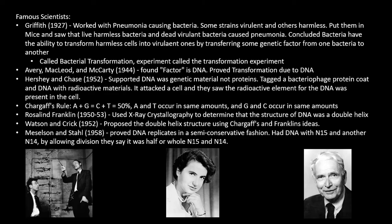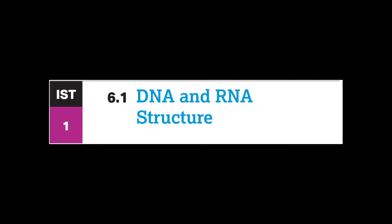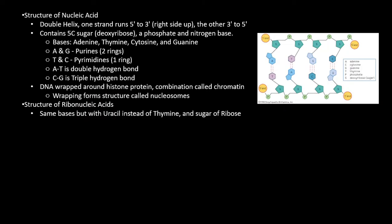Okay, finally on to the fun stuff: DNA and RNA structure. So the basic structure of a nucleic acid. DNA is a double helix structure with one strand running from 5 prime to 3 prime, right side up, and the other is 3 prime to 5 prime. It contains a five-carbon sugar deoxyribose, a phosphate backbone, and nitrogen base. It has the bases adenine, thymine, cytosine, and guanine.